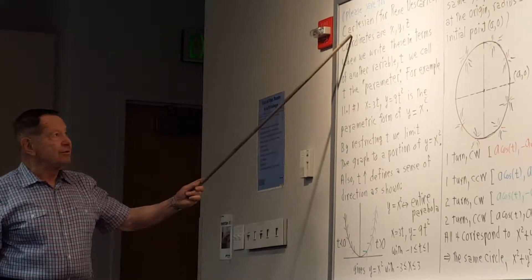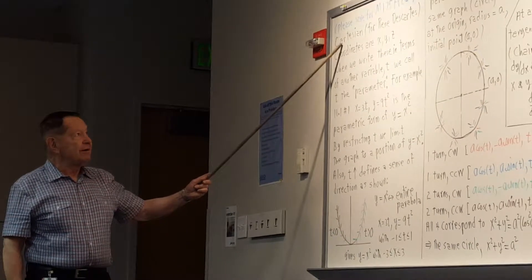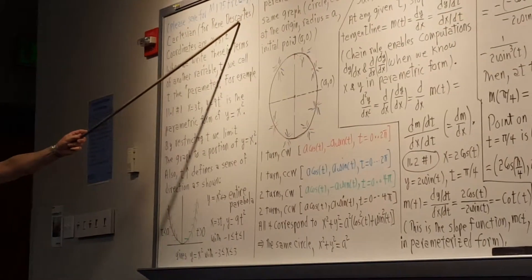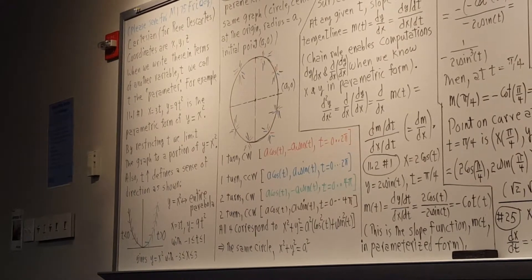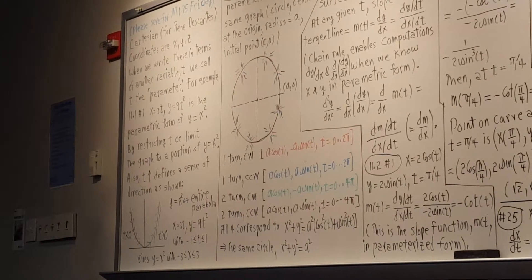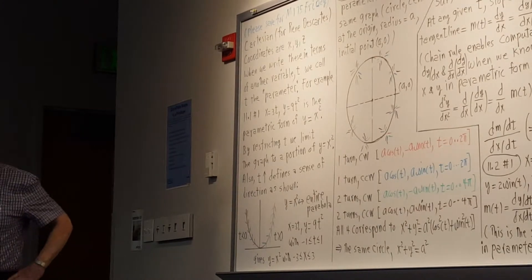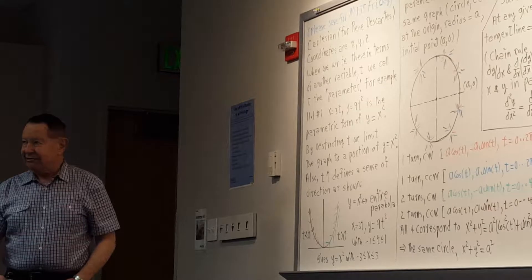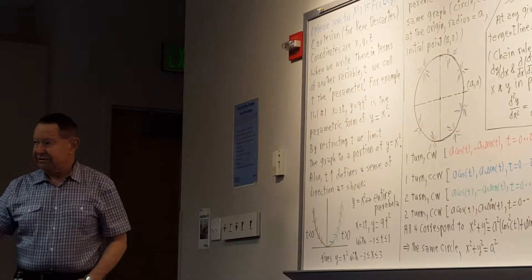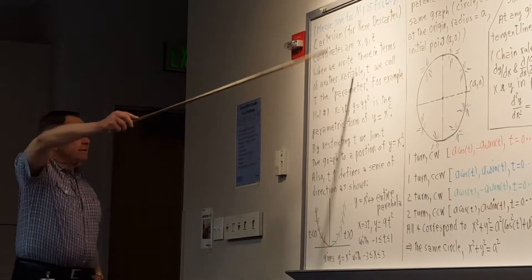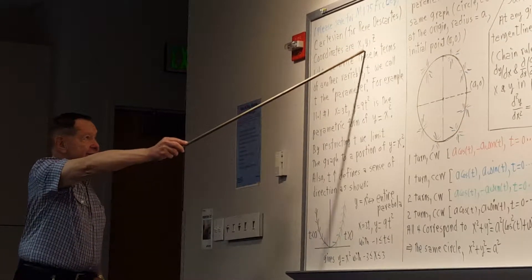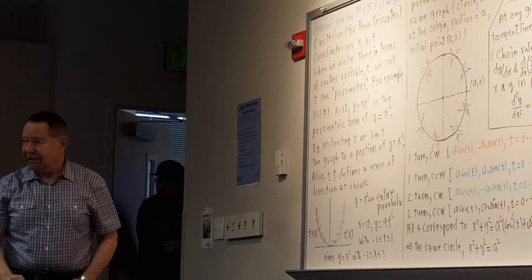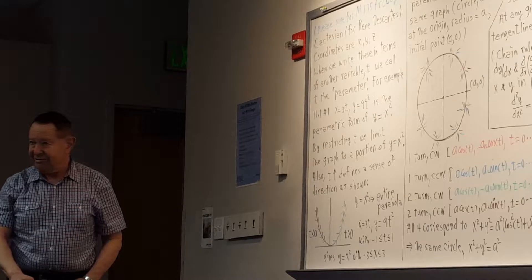First, we have Cartesian coordinates. The word Cartesian refers to Descartes — C-A-R-T-E in Cartesian. He gets credited for the X-Y graph and the idea of setting up an origin, two lines at right angles, and the coordinates. Cartesian coordinates are letters like X and Y in a plane, or X, Y, and Z next semester in three dimensions.